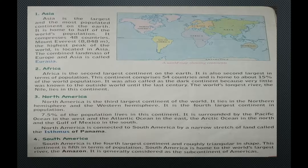Asia is the largest and most populated continent on the earth. It is home to half of the world's population and comprises 48 countries. Mount Everest, the highest peak in the world at 8,848 meters, is located in Asia. The combined land masses of Europe and Asia is called Eurasia.